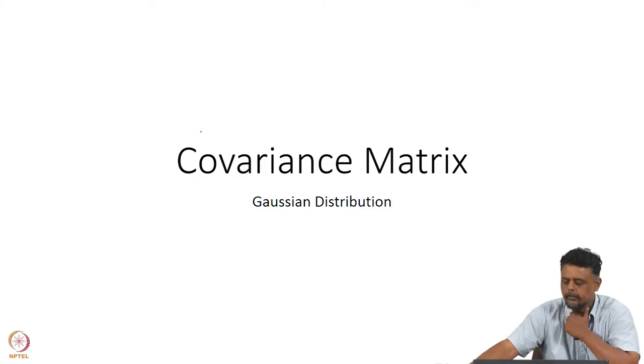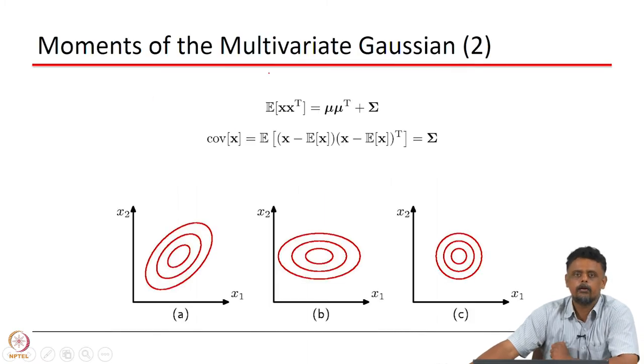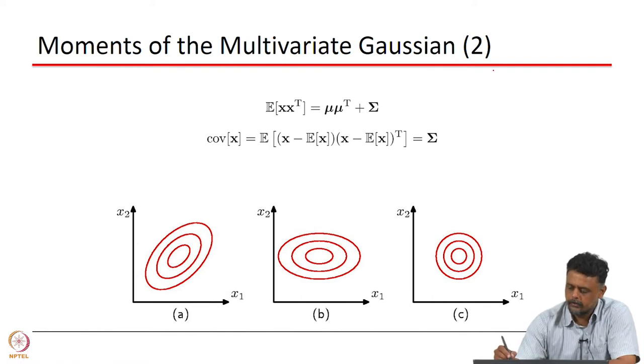A small note about the covariance matrix of a Gaussian distribution. You are all familiar with the univariate Gaussian where the probability density function is given by some normalizing constant and exponential (x minus mu)² divided by sigma².